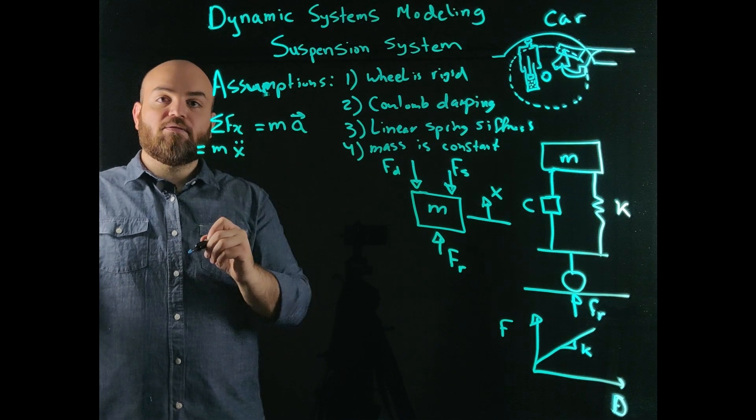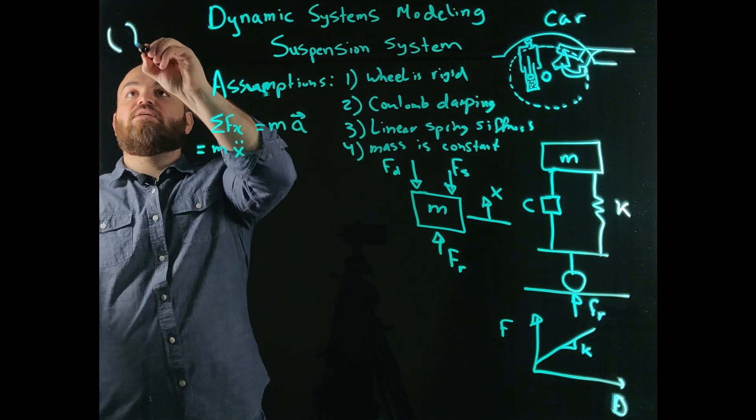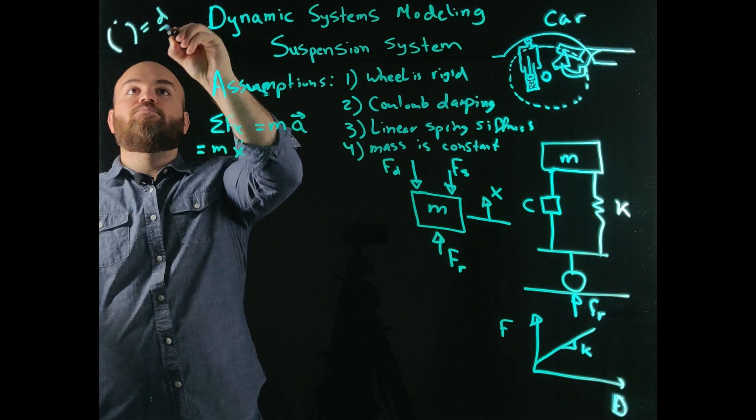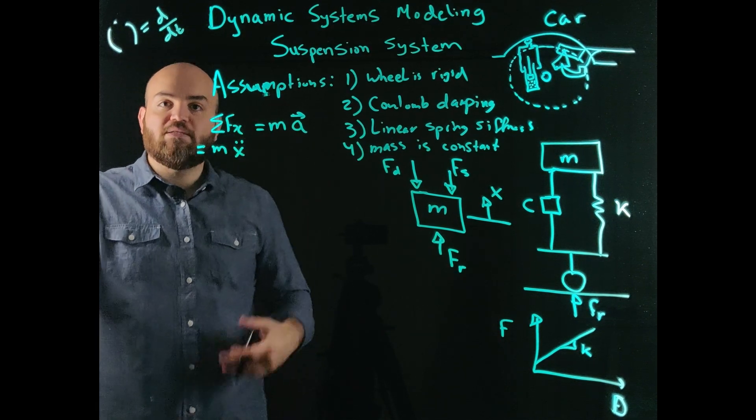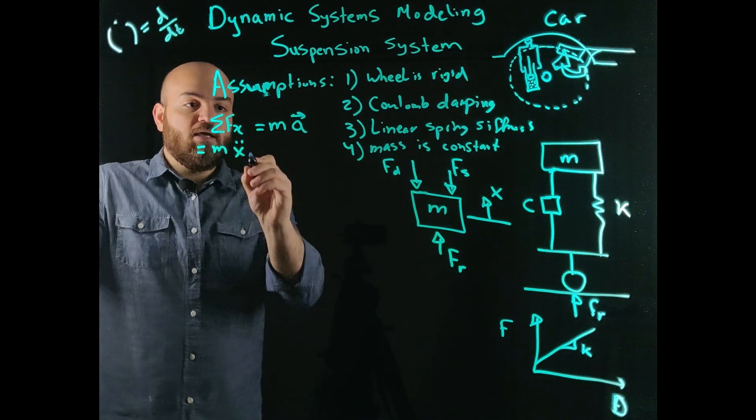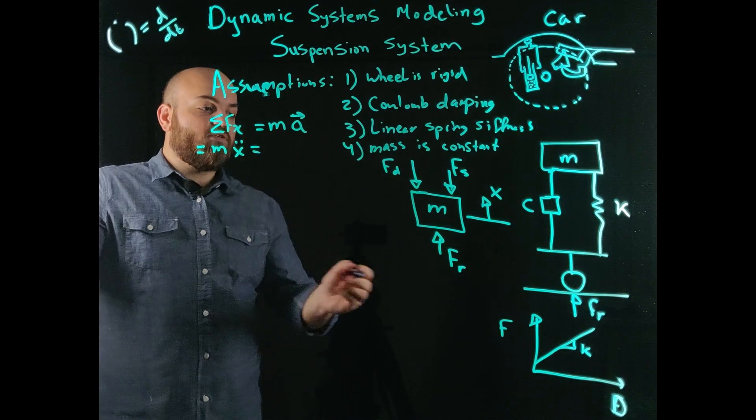Again, here the dot operator displays the derivative over time. So anything I put a dot on top of means it's the derivative over time. So Mx double dot is equal to the summation of forces.